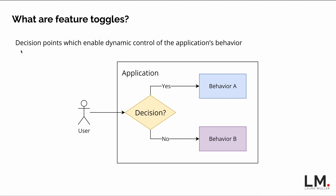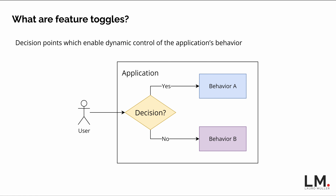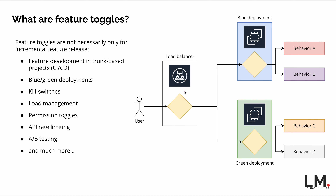For those unaware, a feature toggle is basically a decision point in your application code. The user reaches a point where the code makes a decision. The simplest form — which you should avoid — is if/else. For example, if the user is an admin, render behavior A; otherwise render behavior B. Or if the user is a beta tester, render behavior A; otherwise render behavior B.